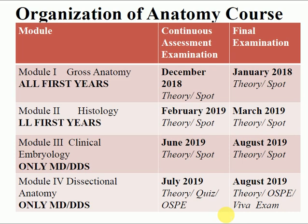In histology, which is microscopic, we are studying the cellular composition of each part of the body — the cells which make up eyes, ears, taste buds, different organs, and even glands. In clinical embryology, we study the development of the human egg from fertilization to delivery. In dissectional anatomy, we dissect cadavers to see the arrangement of structures we studied in gross anatomy as theory.